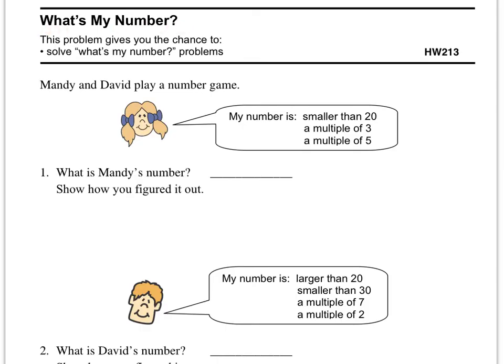And here we are on the back side. What's my number? Mandy and David play a number game. My number is smaller than 20, it's a multiple of 3, and a multiple of 5. What is Mandy's number? So if it's a multiple of 3, you can count by 3's and list everything. You know, 3, 6, 9, 12, 15, 18, and so on.